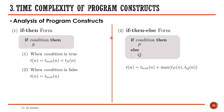For the if-then-else statement, we have the condition, statement P if the condition is true, and statement Q if the condition is false. You need to find the time complexity of both statements P and Q, because the time complexity is either equal to the time spent executing statement P if the condition is true, or equal to the time spent executing statement Q if the condition is false.